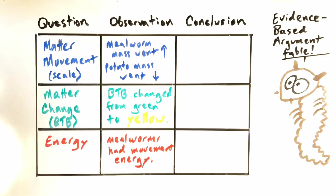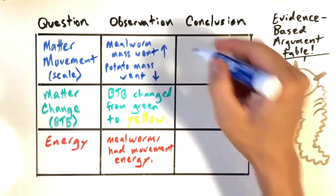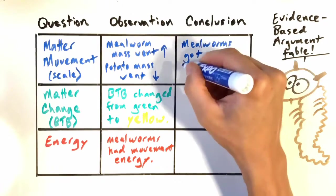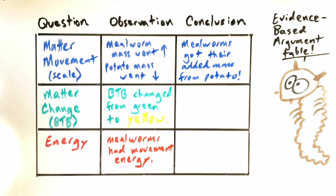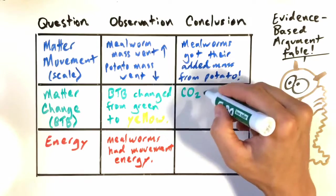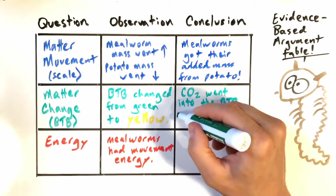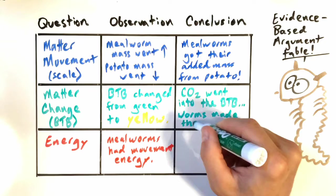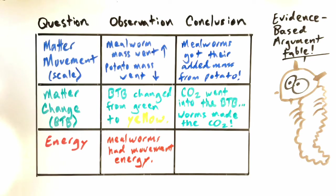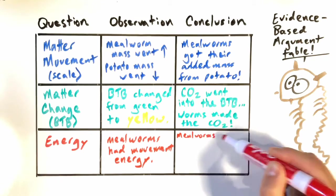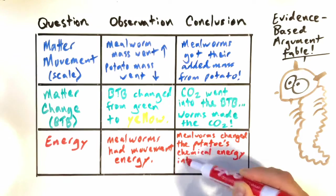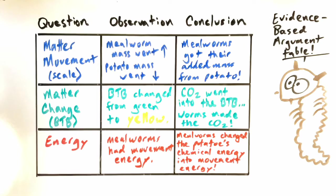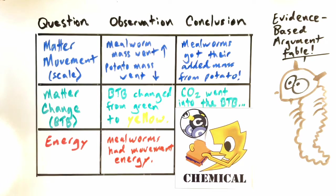So let's come to some conclusions and see how they match yours. Since the mealworms increased in mass and the potatoes decreased in mass, it's most logical to assume that the mealworms got their added mass from the potato. It's also logical to assume that because we saw the BTB turning yellow and acidic, that means that carbon dioxide entered the BTB. It must have come from the worms. So as far as energy, we watched the mealworms moving. So it's natural to ask, where did that energy come from? Well, really the only source of energy in the system was the potatoes. So it's natural to conclude that the mealworms changed the potatoes' chemical energy into movement energy.